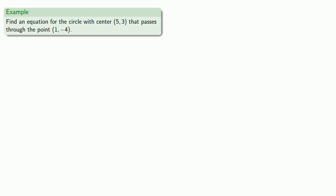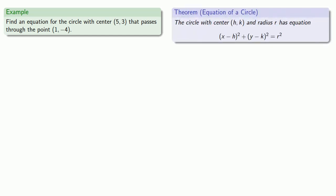So let's try to find the equation of the circle with center (5, 3) that passes through the point (1, -4). So remember, we can write the equation of a circle if we have the center and radius. Well, we have the center, but we don't have the radius. So how can we get the radius? Well, the radius of the circle will be the distance between the center of the circle and any point on the circle. Well, we know the center, we know a point on the circle, and we know how to find the distance between them.